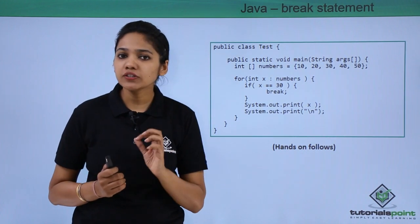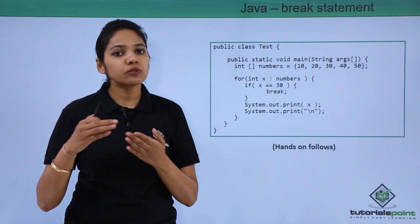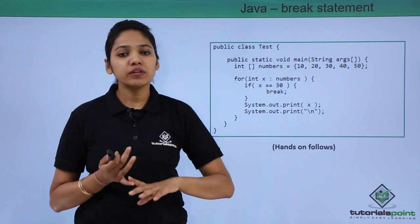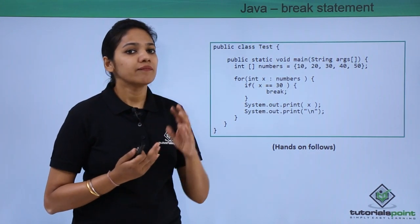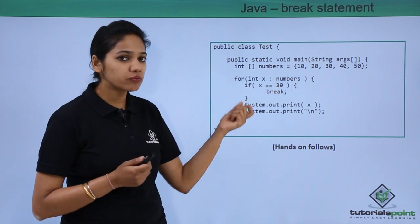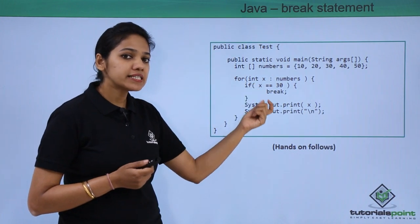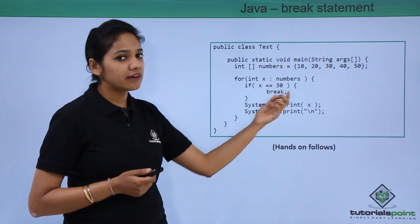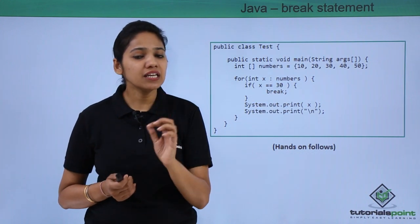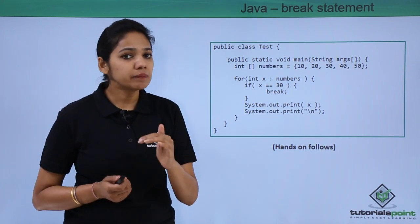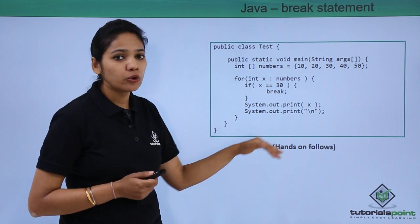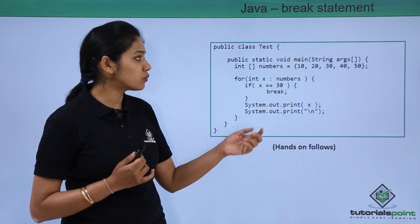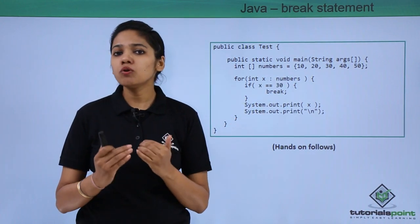It first fetches the value 10, then checks if 10 is equal to 30. That is no, the condition is false. Therefore it comes out and executes the rest of the statements, printing the value as 10, then 20. When the third value is fetched, that is 30 — is 30 equal to 30? Yes, the condition is true. In that case, it executes the statement inside the conditional block, which is again a break keyword that terminates the loop at that point. Therefore, the output will be only 10 and 20, and no more values will be printed.